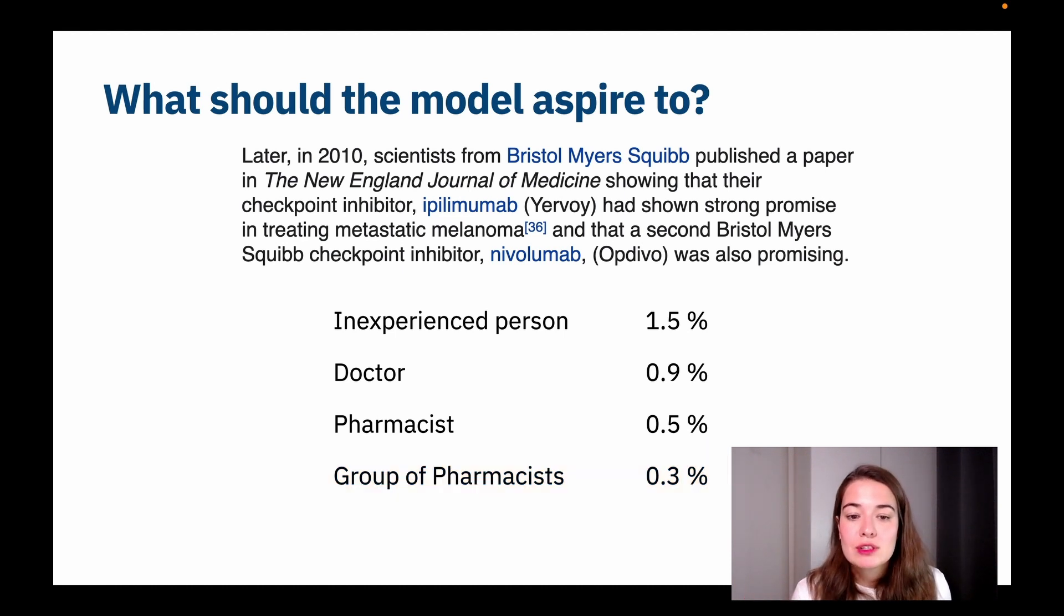So basically you can say, you know what, I'm going to aspire to the doctor level because that's already a little bit higher than what I can achieve right now. And as far as I can get 0.9 error, that's going to be good for me or good for my application or good for my solution. So you don't always have to aspire for the Bayes optimal error.